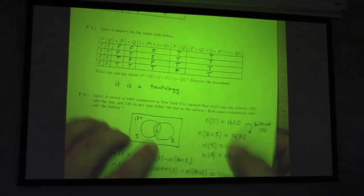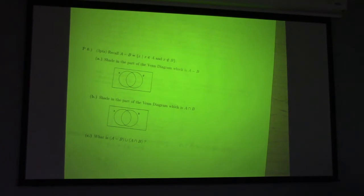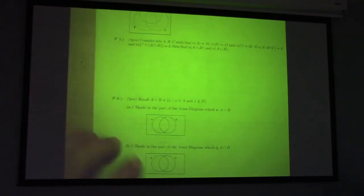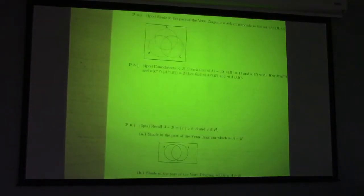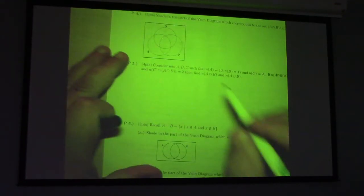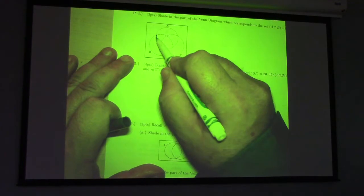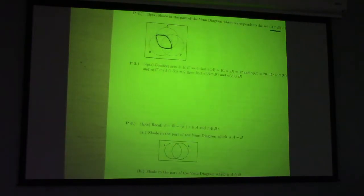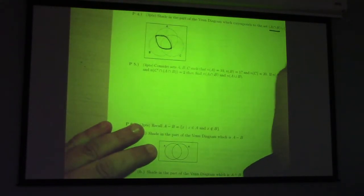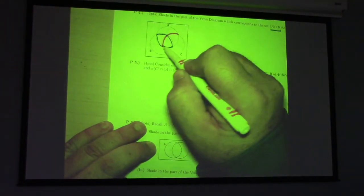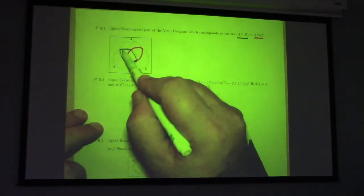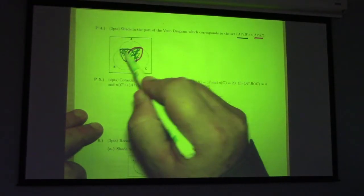All right. I'm going to move on. So, I will just do... For this one, let me just go ahead and do the shading for you guys. So, we have A intersect B which is where? A intersect B is like this, right? And then, where's A intersect C? A intersect C is this piece right here, right? So, the union is all of that.